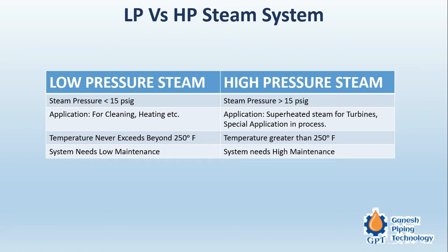For low pressure steam, the applications are cleaning and heating — normally in pharmaceutical industries where a heating medium is required for formulations, and also as a cleaning medium. In pharmaceuticals and dairy, once a batch is completed there is complete flushing of the piping system, because no trace of the previous batch should remain. Steam plays a very important role in this cleaning process; mostly the CIP — clean-in-place — system is utilized. For high pressure steam, the application is superheated steam for turbines.